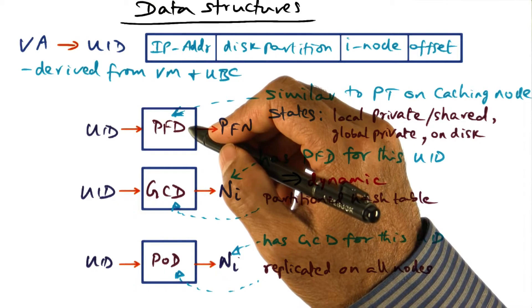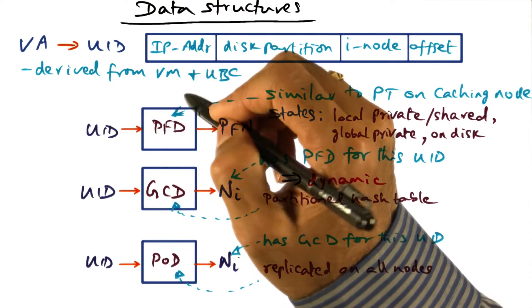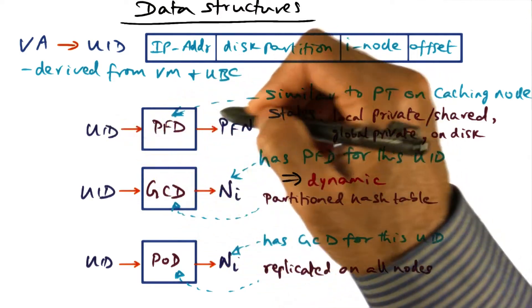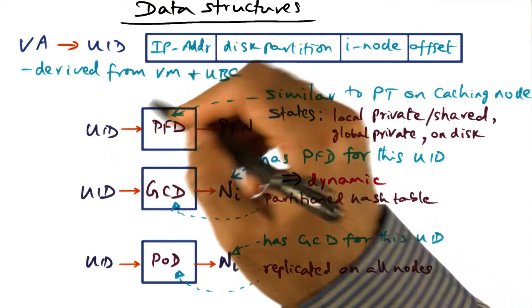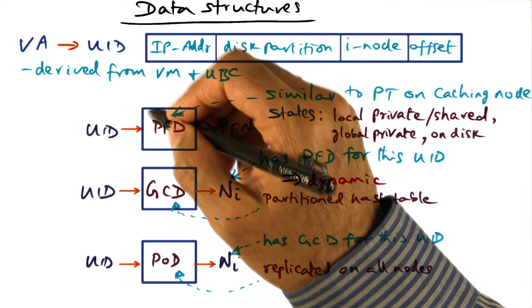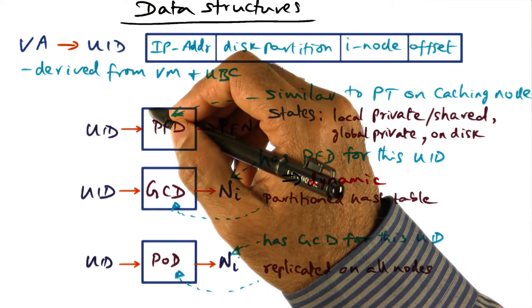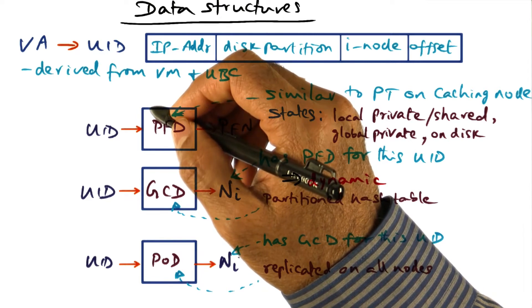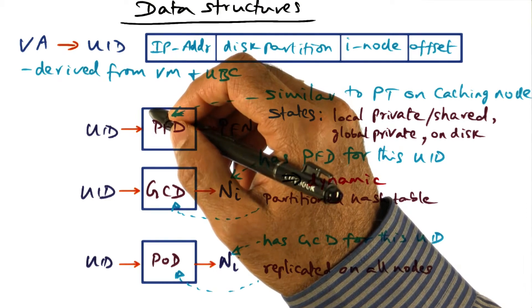Or we can say that there's some way of magically mapping, given a UID, which node will have the PFD for me to look up and find out the backing physical page. But we don't want to do a static binding of UID to the node that manages that UID. Because if we make a static mapping, then it pushes the burden on one node if some pages become really hot and everybody wants to use that.